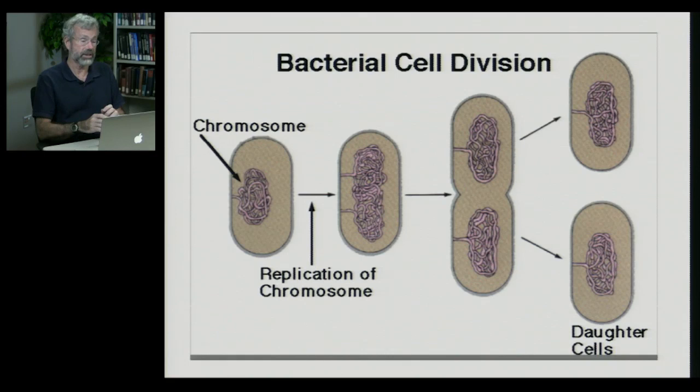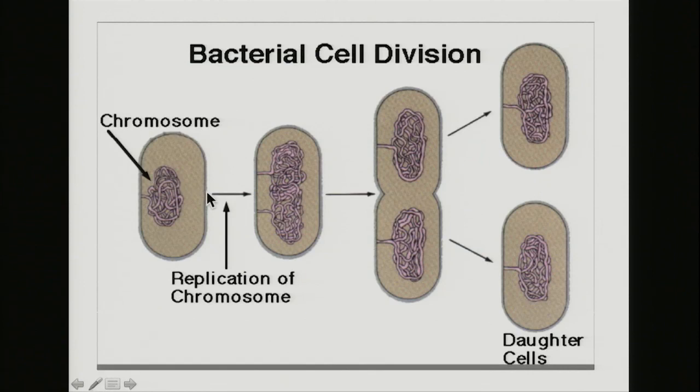We've seen this before — cell division of bacteria. First you have your circular chromosome in the bacteria. Then there's DNA replication, so that's chromosomal replication. The cell walls elongate, pinch off, and now you've got two identical daughter cells, genetically the same as the original. There's no sex — these are identical to the mother cell.